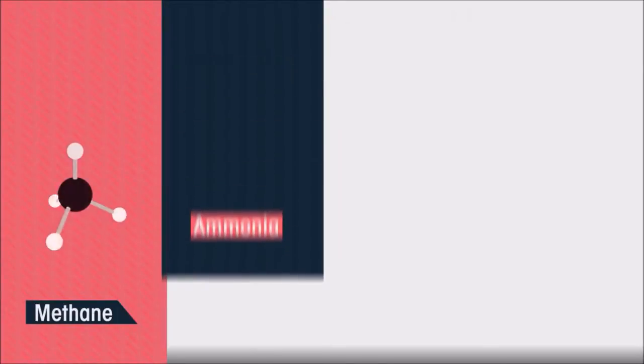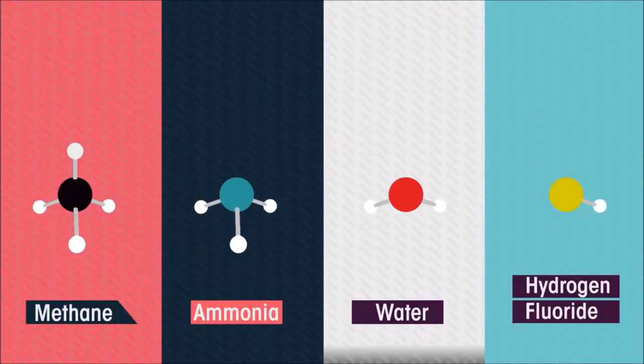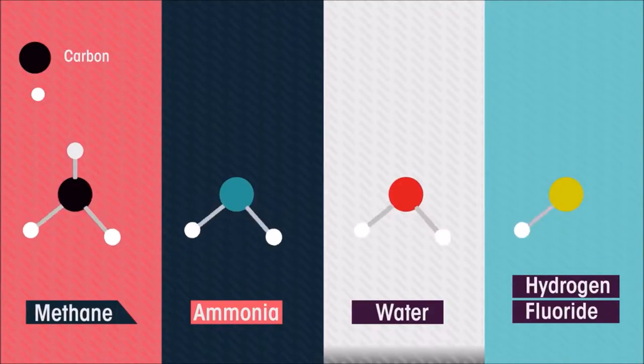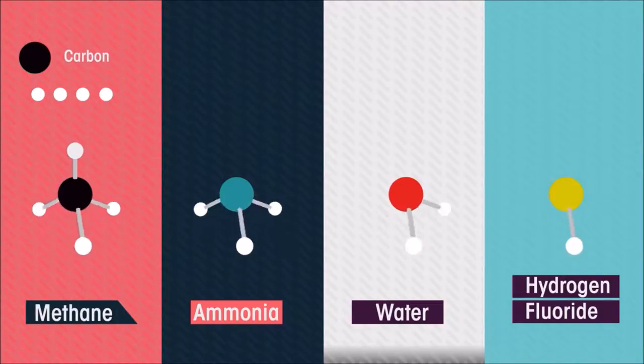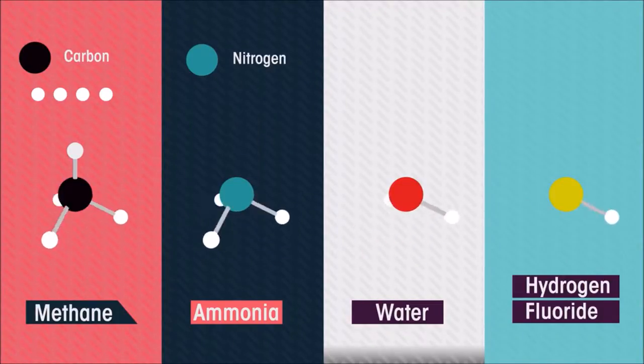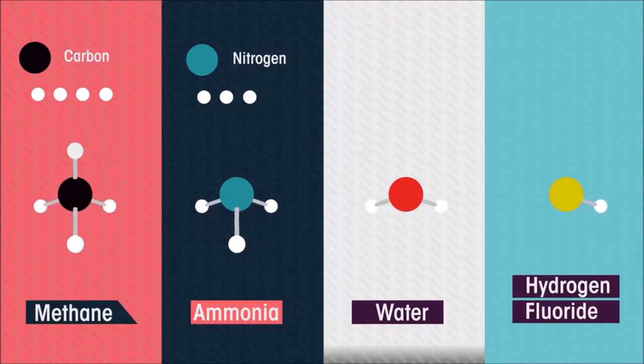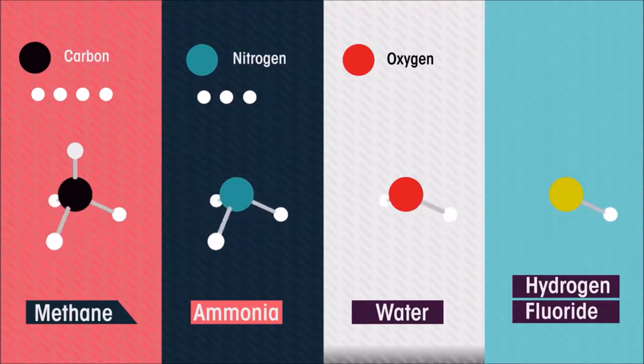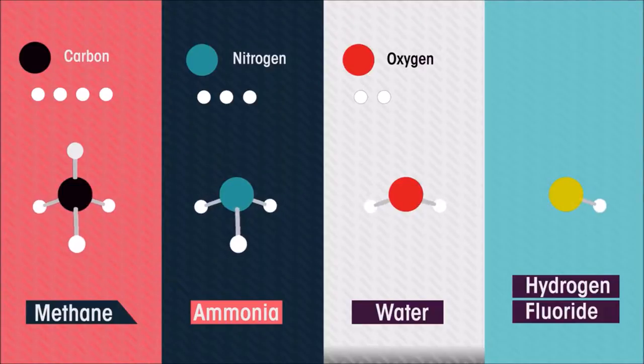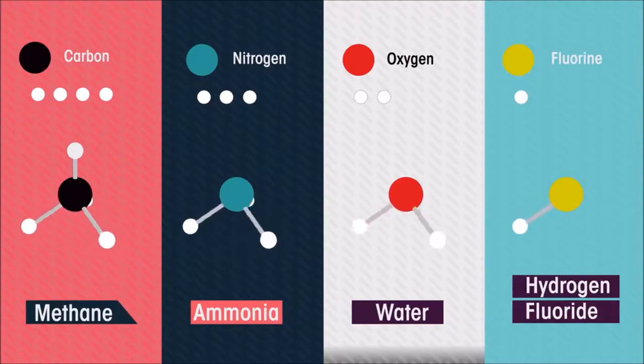The bonding in methane, ammonia, water and hydrogen fluoride shows a pattern. Methane is carbon bonded to four hydrogen atoms. Ammonia is nitrogen bonded to three hydrogen atoms. Water is oxygen bonded to, guess how many, two hydrogen atoms. And hydrogen fluoride is fluorine bonded to just one hydrogen atom.